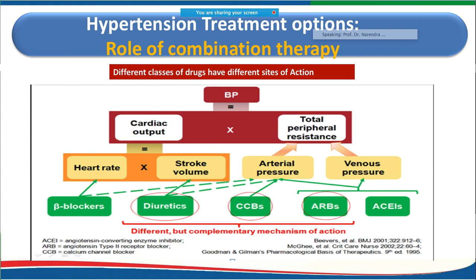Blood pressure equals cardiac output multiplied by total peripheral resistance. Cardiac output is determined by heart rate and stroke volume; total peripheral resistance reflects arterial and venous pressure. Beta blockers affect heart rate; diuretics affect stroke volume; ARBs affect both arterial and venous pressure; and calcium channel blockers affect arterial pressure — making ARBs complementary when combined with diuretics.